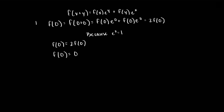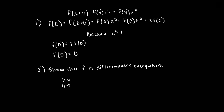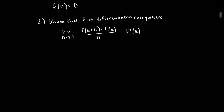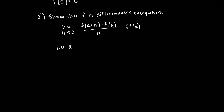So this was the first step, and as a second step, we are going to show that f is differentiable everywhere, and not just at 0. Doing this might give us a new interesting equation to work with. Recall that saying that f is differentiable at a, a real number, means by definition that the limit as h approaches 0 of f of a plus h minus f of a, all over h, exists.